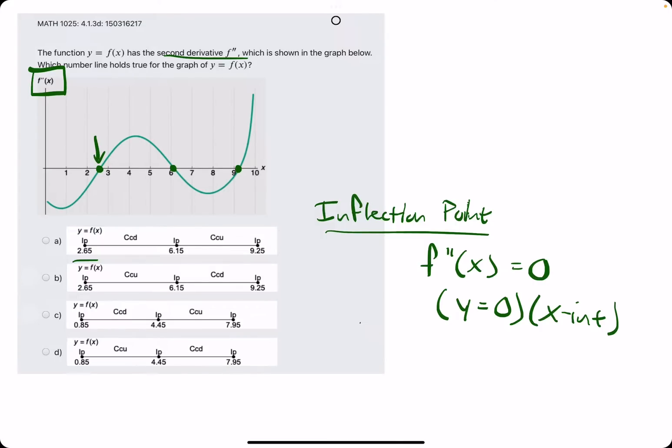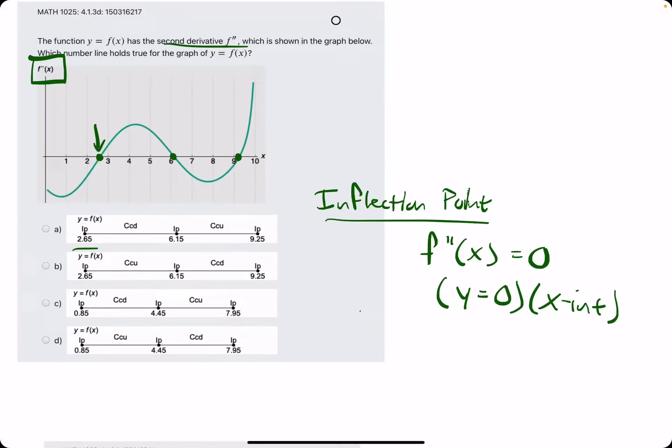Therefore, an inflection point for f, or a possible inflection point really, but it's definitely an inflection point when the concavity changes. So CCD and CCU is the next thing.